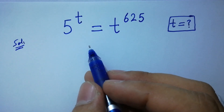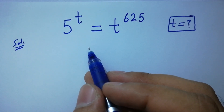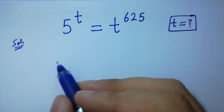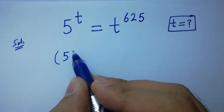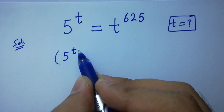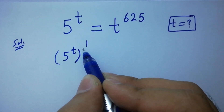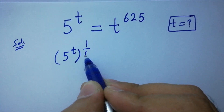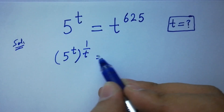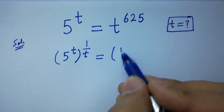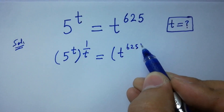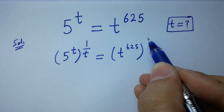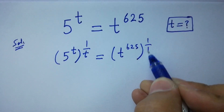To solve this, take power 1 over t on both sides. So 5 to the power t, to the whole power 1 over t, equals t to the power 625, to the whole power 1 over t.